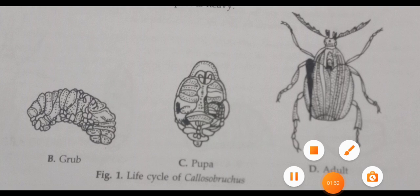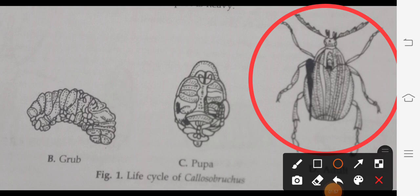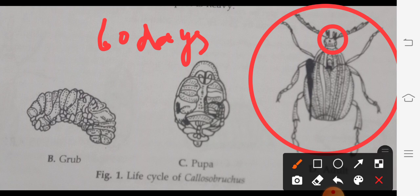If we see this adult beetle, it has a very small head portion and its life cycle is completed in 60 days. Life cycle is of 60 days and its adult lifespan is about 8 to 21 days.